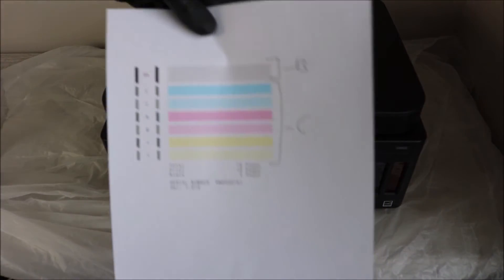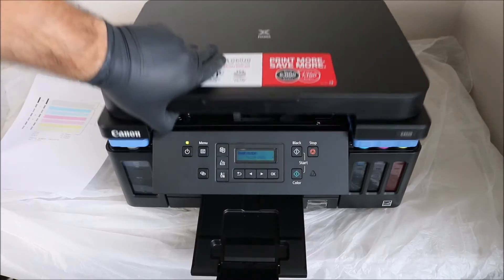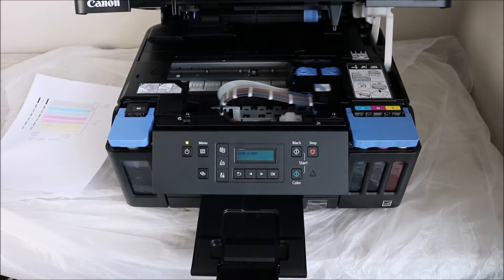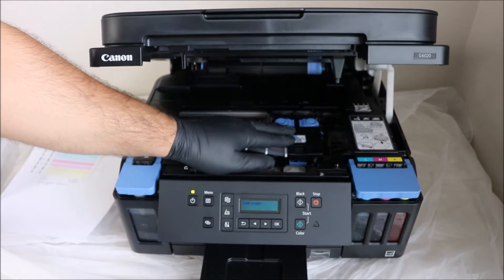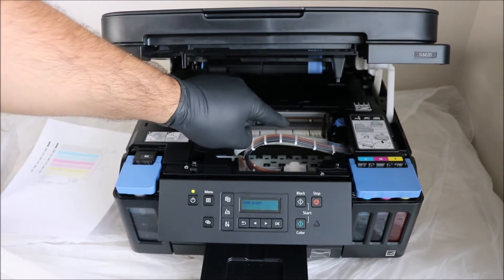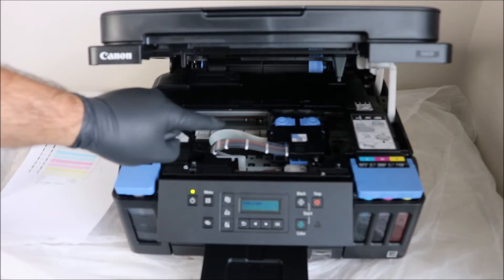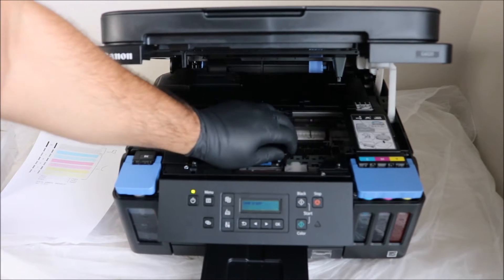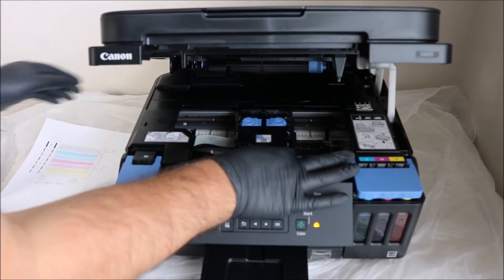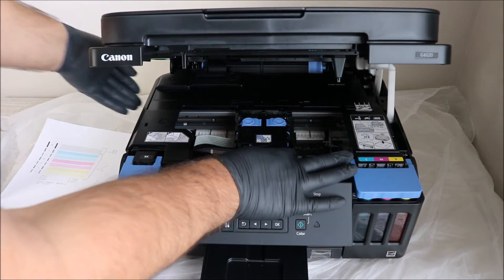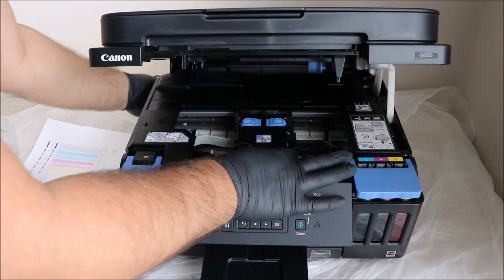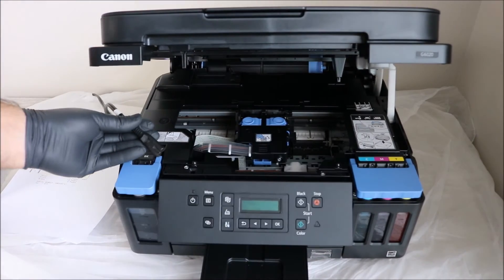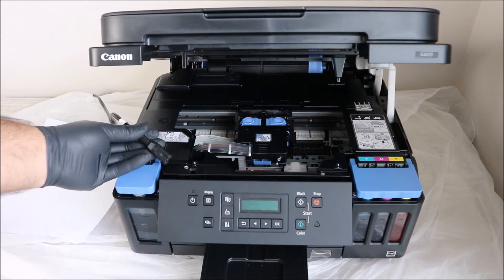So you're going to lift the top of the printer and your print carriage should be kind of loose and moving around. Once you get it slightly in the middle, you're going to grab it gently, this won't do any damage, and you're going to unplug the power cable from the back of the printer. Okay, once that's unplugged, you're good to go.